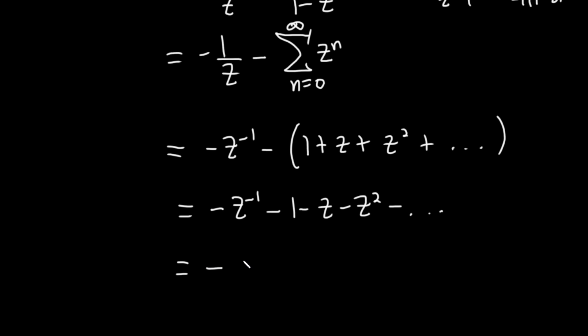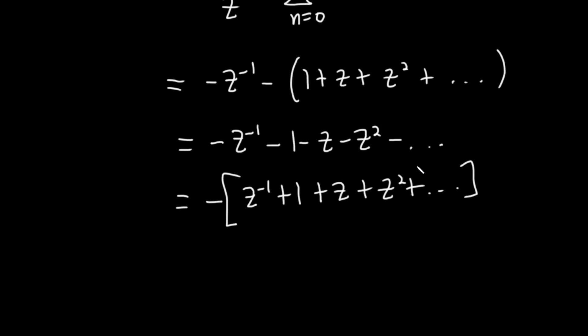You could pull out the negative and write it like this: negative z to the negative 1 plus 1 plus z plus z squared plus...